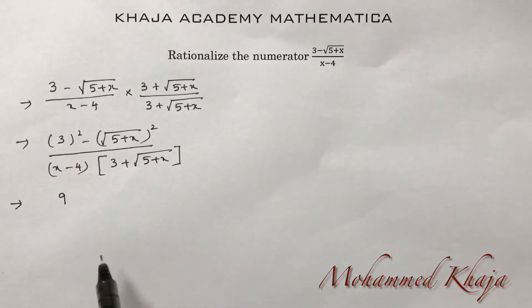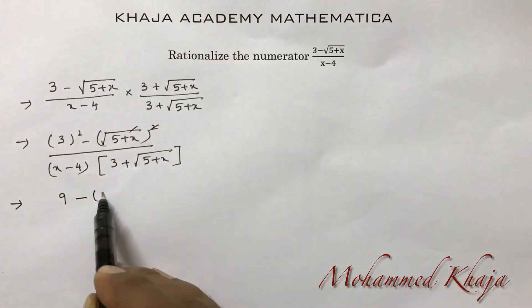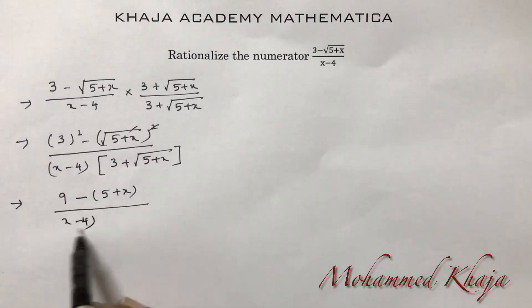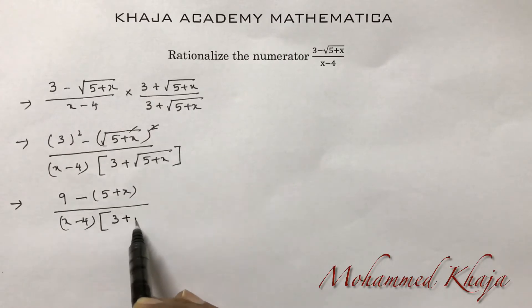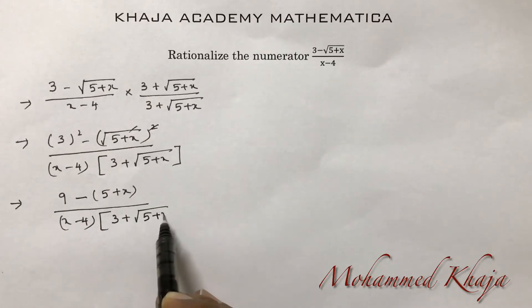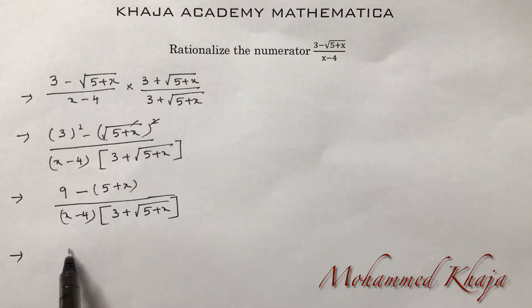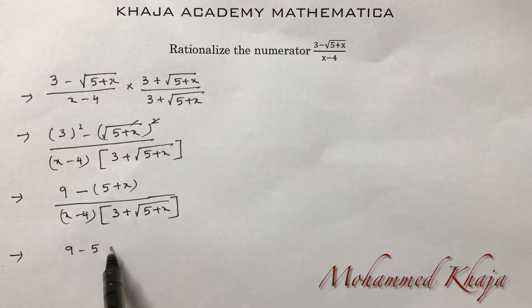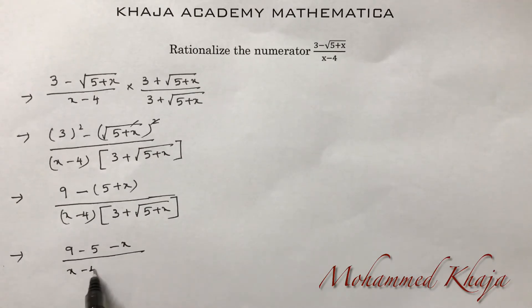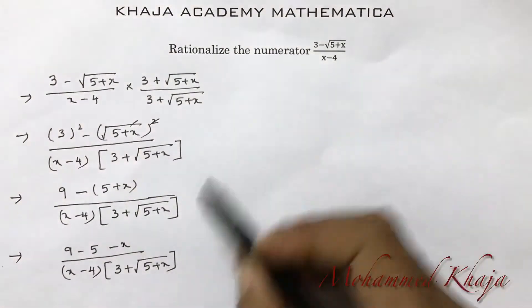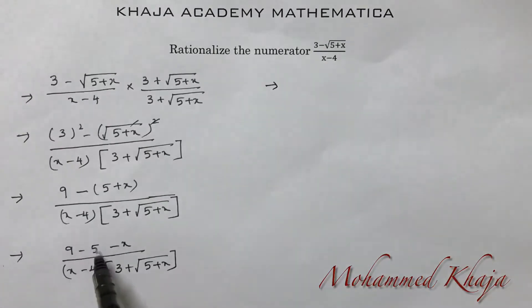Simplifying further: 3 squared is 9, and the square root cancels to give just 5 plus x. So the numerator becomes 9 minus 5 minus x, over x minus 4 into 3 plus root(5+x).